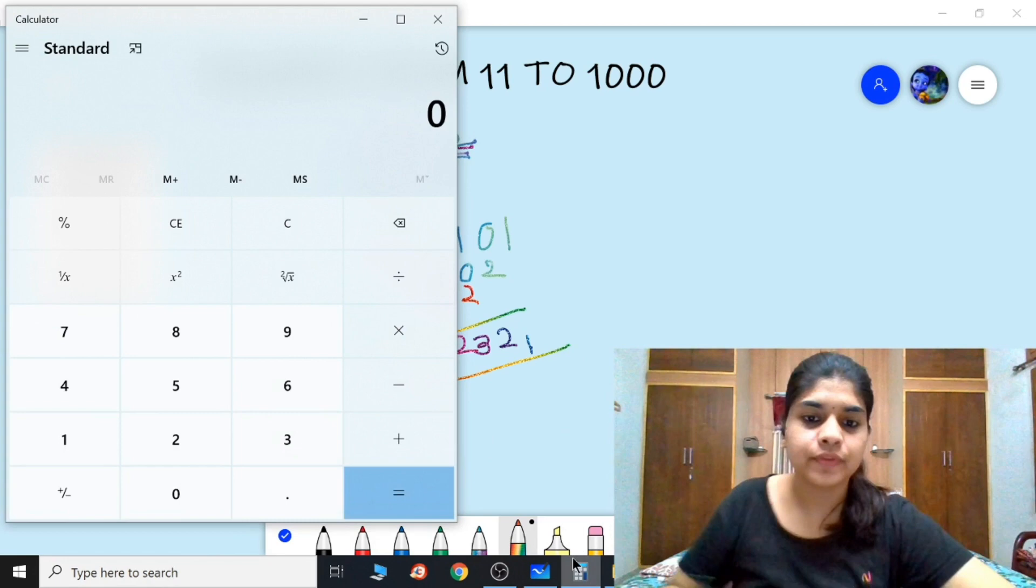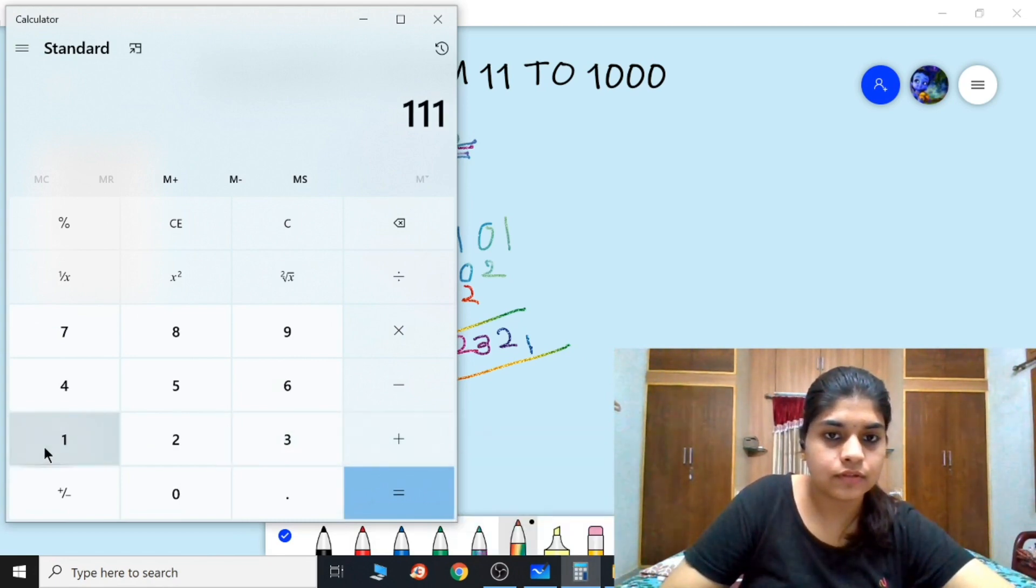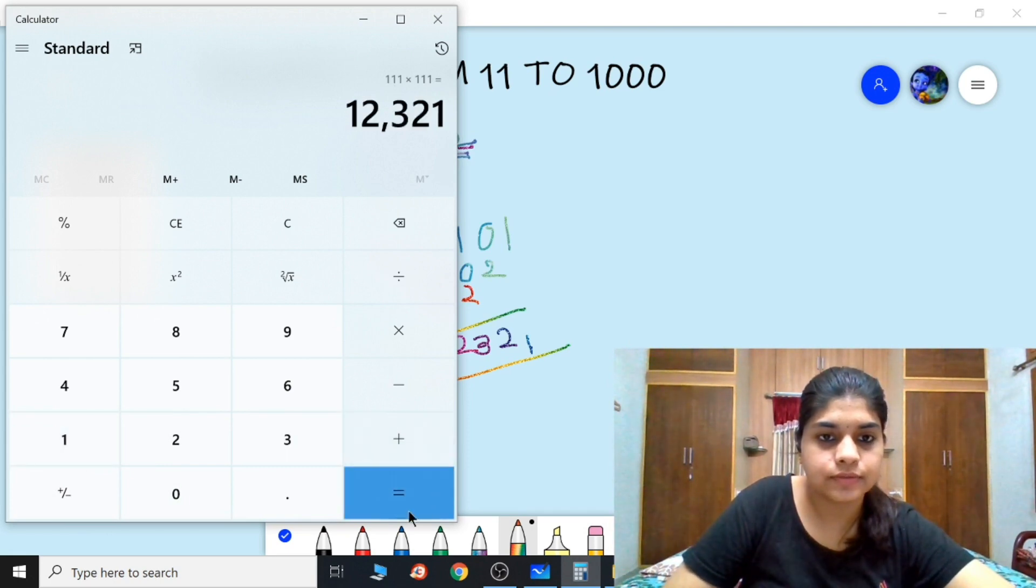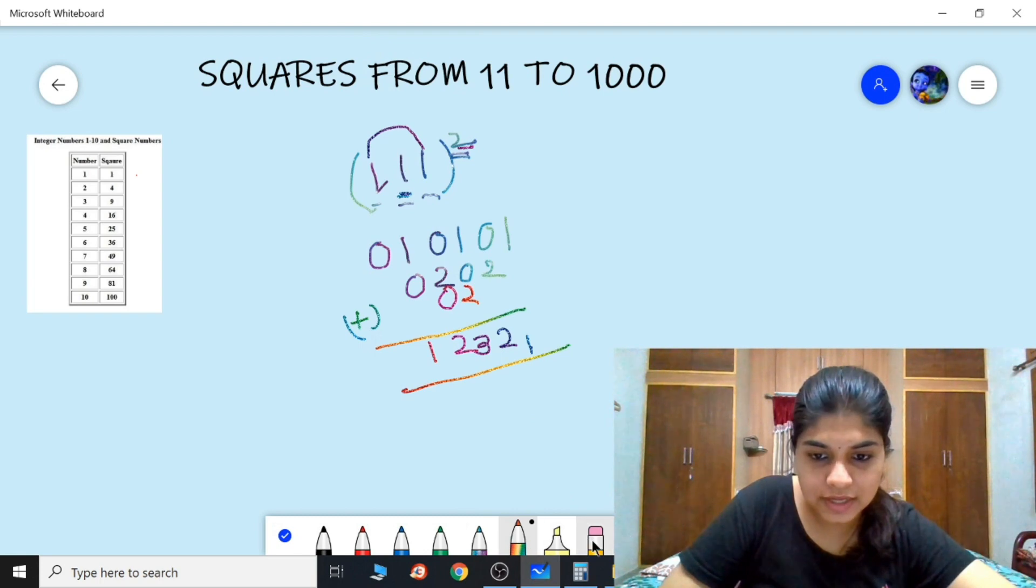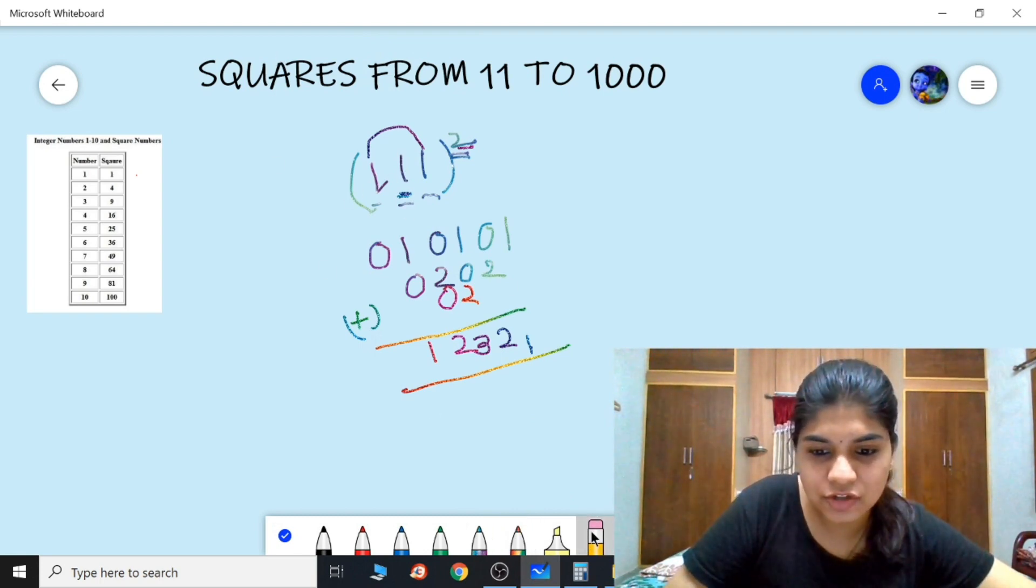So 12321 is the answer. Let's check with the calculator. 111 into 111 is 12321. Simple right? So another example, let's take a larger number now.